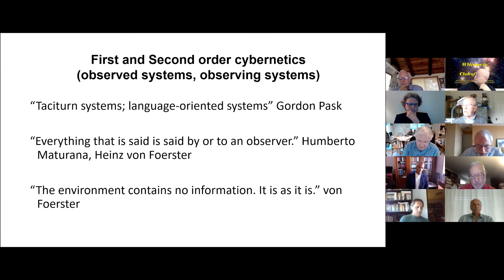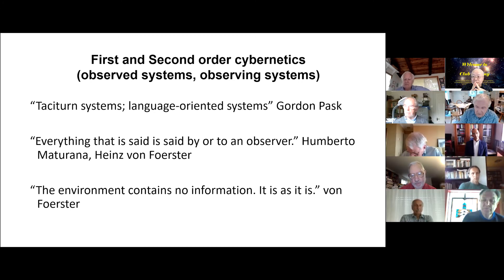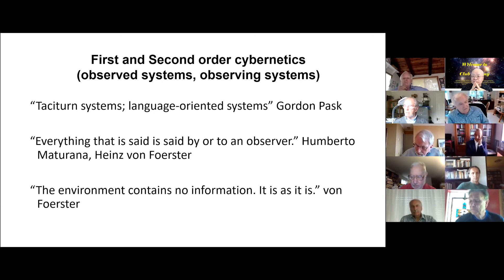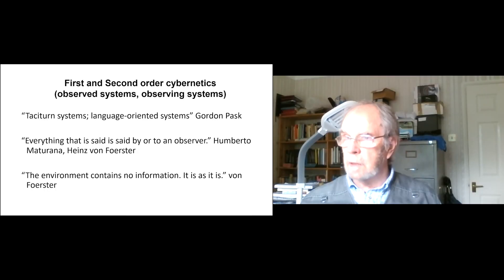Then we have a classic combination of theorems from Umberto and Heinz. Everything that is said is said by or to an observer. So immediately spurs us into a conversation with other observers, and it doesn't allow us to have any other authority than what we are saying to each other in our conversations. There's no external authority to be had from books, unless we agree that there's no observed domain to refer to.